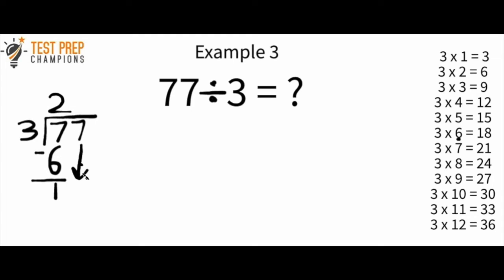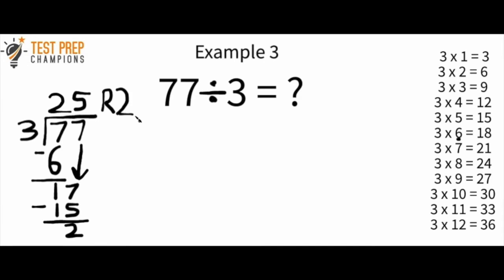Now I take this 7 and pull it down, so I have 17. The next question I ask myself is how many times does 3 go into 17? The answer is 5. Looking at our 3 times tables, 3 times 5 is 15, which is close to 17 but not over it. We don't pick 6 because 3 times 6 is 18, which is too big. So I write my 5 up top, then do 3 times 5 which is 15. I put 15 here and subtract: 17 minus 15 is 2. So the final answer is 25 remainder 2.